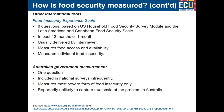Then there is the Australian government measurement. The government uses one question to measure food security in Australia through national surveys every couple of years. It really only measures the most severe form of food insecurity — specifically whether people have run out of food and haven't had the money to buy more — and is therefore unlikely to capture the true scale of the problem in Australia.